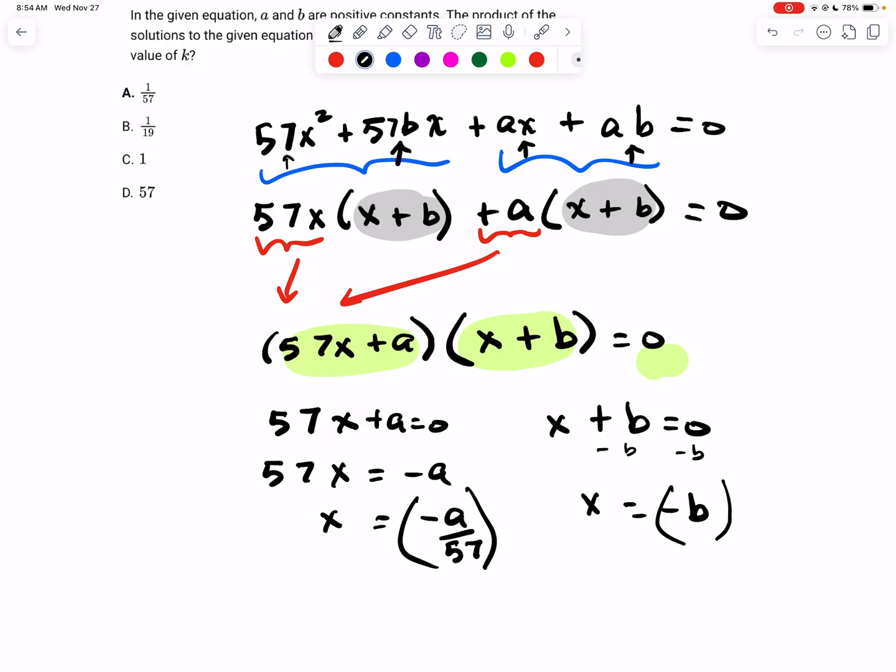So the product of the two solutions is going to be negative a over 57 times negative b, which is going to be positive, because they're both negative. So ab over 57.